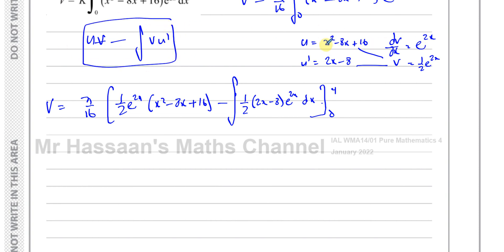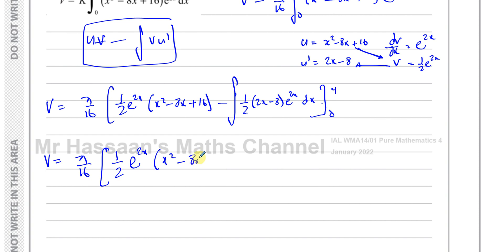So I write u on the left, dv/dx on the right, underneath u is u dash, underneath dv/dx is v. First this times this, minus the integral of that times that. So we have a half e to the power of 2x times x squared minus 8x plus 16, minus the integral of this times 2x minus 8. Before integrating that second part, I simplify it by multiplying by a half, giving x minus 4 times e to the power of 2x dx.